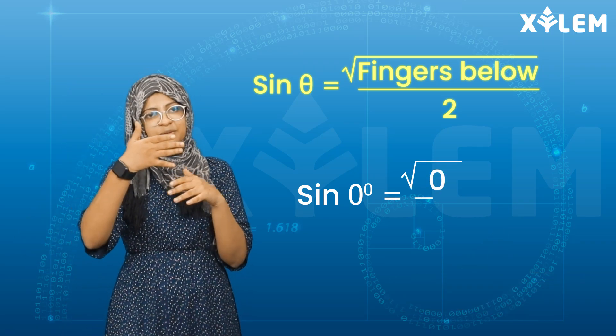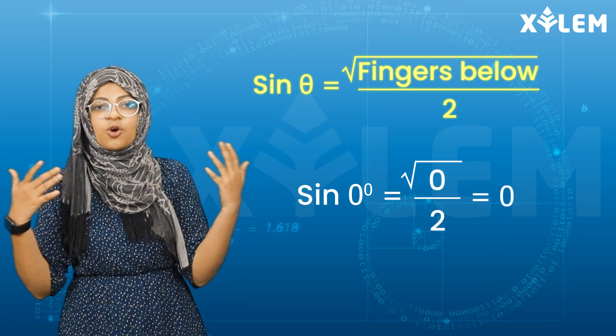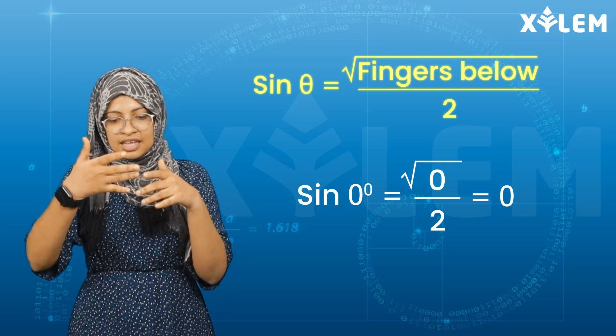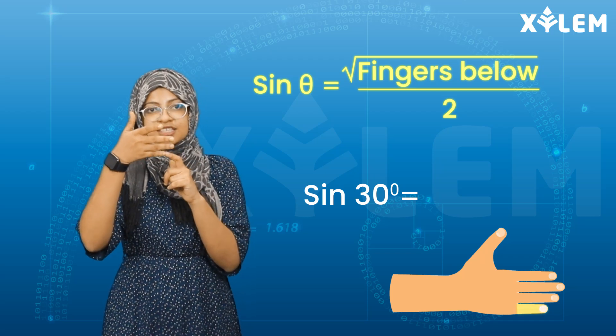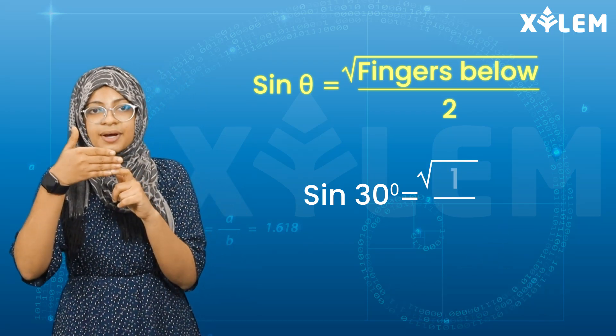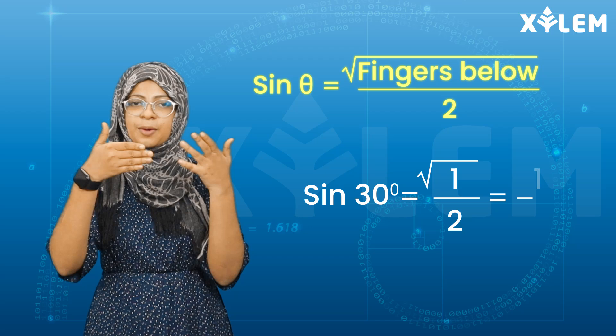So root of 0 divided by 2. Root of 0 is 0, so sin 0° is 0. Now sin 30°. How many fingers are below for 30 degrees? It's 1. Then root of 1 by 2, so sin 30° equals 1/2.